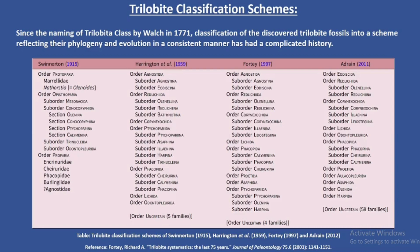The first scheme was done by Swinerton in 1915, largely focused on using the pattern of facial sutures to diagnose the orders and the subdivisions. The second scheme was done by Harrington in 1959, who provided a history of various major classification schemes erected since the early 1800s. The third was proposed by Fortey in 1997, who summarized the trilobite classification and presented a revised scheme in which he expanded the order Ptychopariida into some suborders. The last scheme was done by Adrian in 2011, who compiled a list of all known genera and families and made considerable modifications to the Fortey scheme, particularly regarding the number of recognized families and superfamilies.